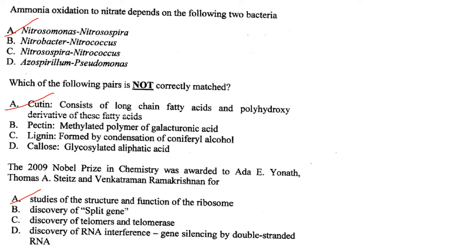Ammonia oxidation to nitrate depends on two bacteria: Nitrosomonas and Nitrospira. Answer is option A.